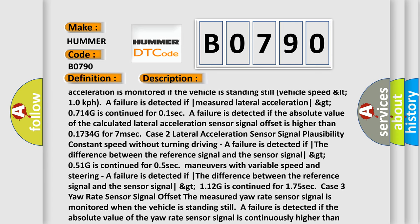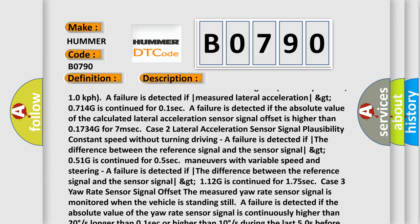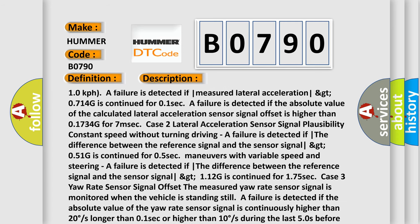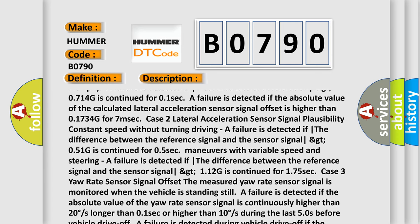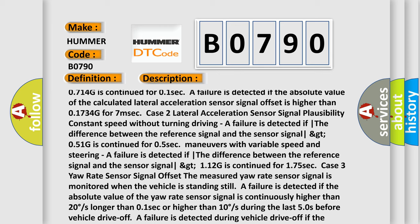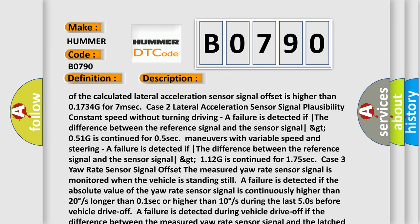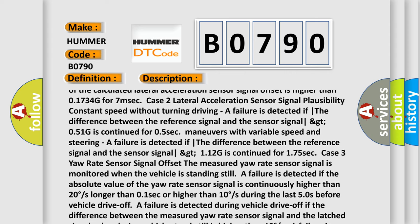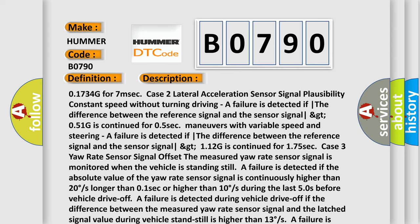Case 3: Yaw Rate Sensor Signal Offset. The measured yaw rate sensor signal is monitored when the vehicle is standing still. A failure is detected if the absolute value of the yaw rate sensor signal is continuously higher than 20 degrees/s longer than 0.1 sec, or higher than 10 degrees/s during the last 50s before vehicle drive off. A failure is detected during vehicle drive off if the difference between the measured yaw rate sensor signal and the latched signal value during vehicle standstill is higher than 13 degrees/s. A failure is detected if the absolute value of the calculated yaw rate sensor offset is higher than 6 degrees/s for seven milliseconds.